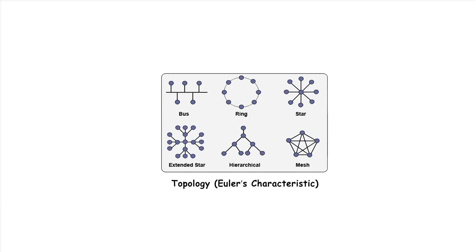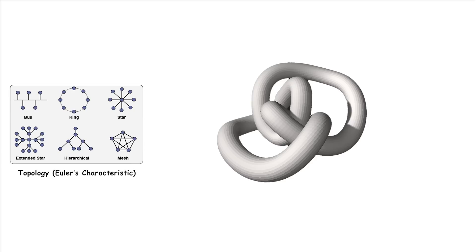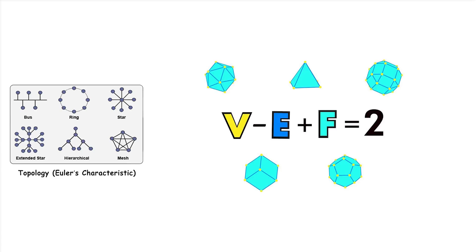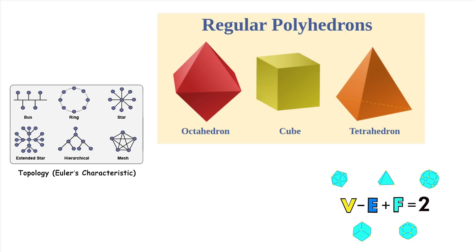Topology. Euler's characteristic. Topology is a branch of mathematics that studies the properties of shapes and spaces that are preserved under continuous deformations. Euler's characteristic is a number that describes a topological space's shape or structure. For a polyhedron, it's calculated as V minus E plus F, where V is the number of vertices, E is the number of edges, and F is the number of faces. It helps in understanding the fundamental nature of the shape.